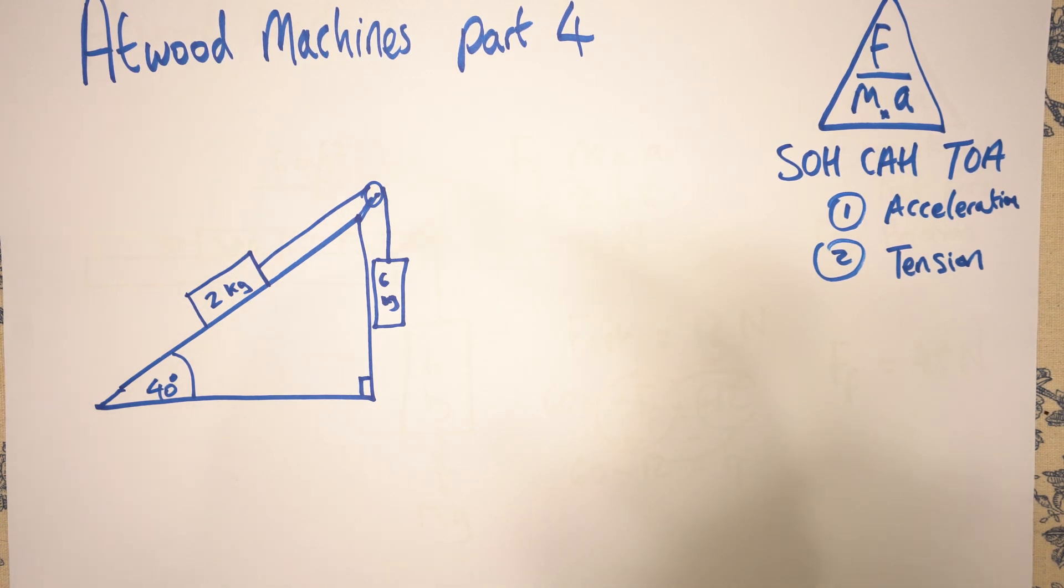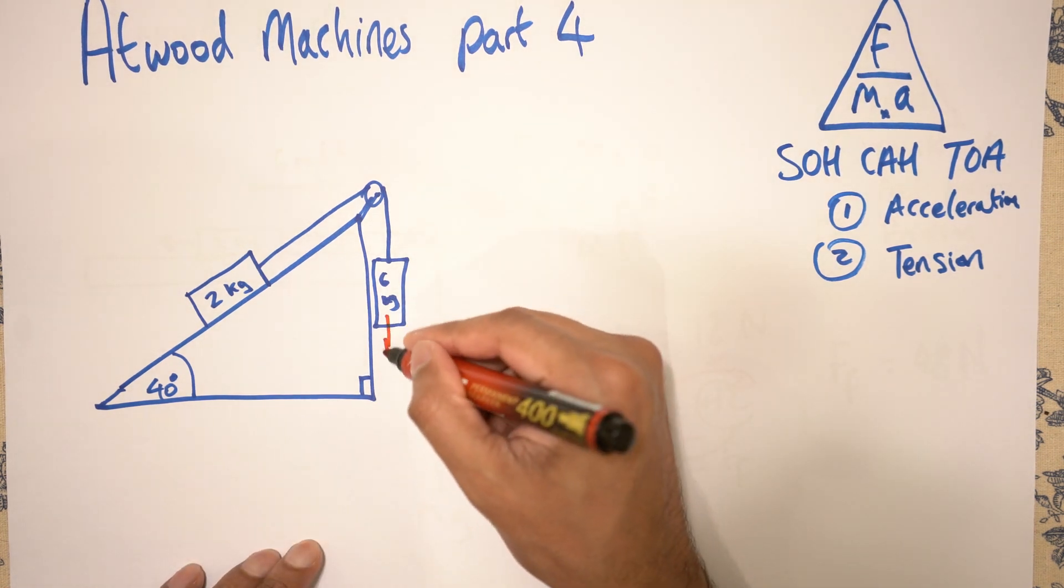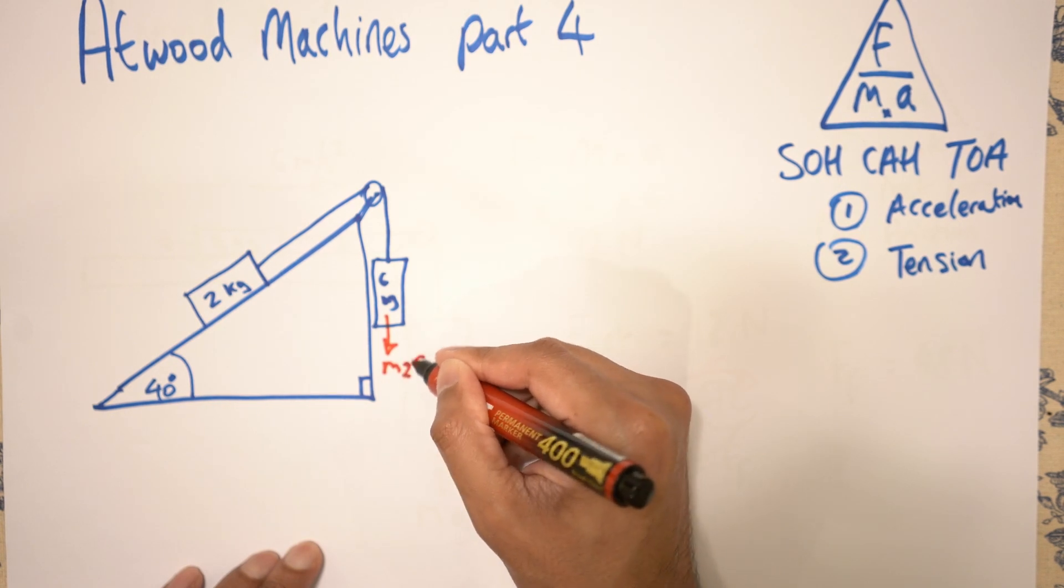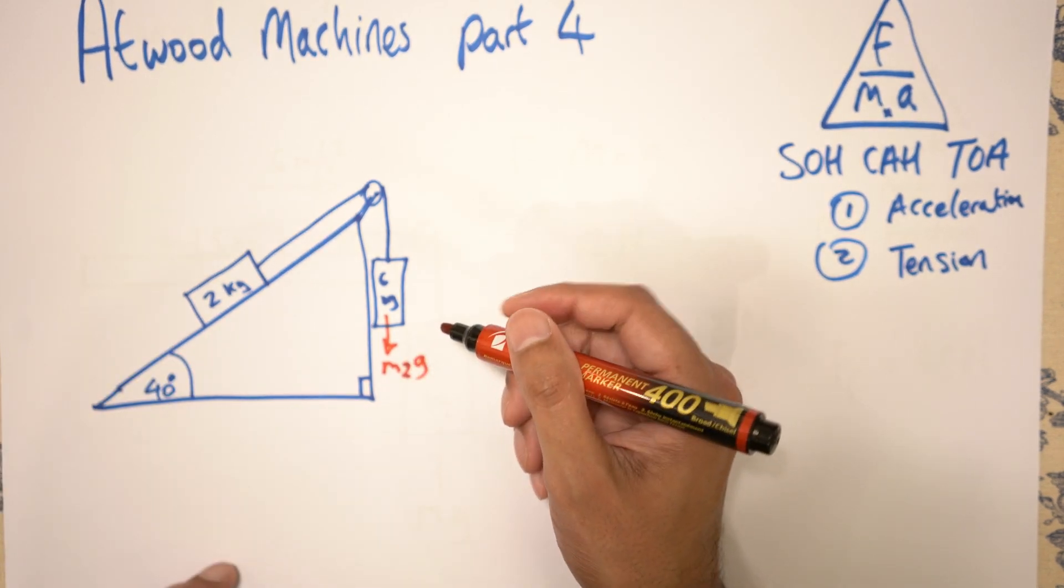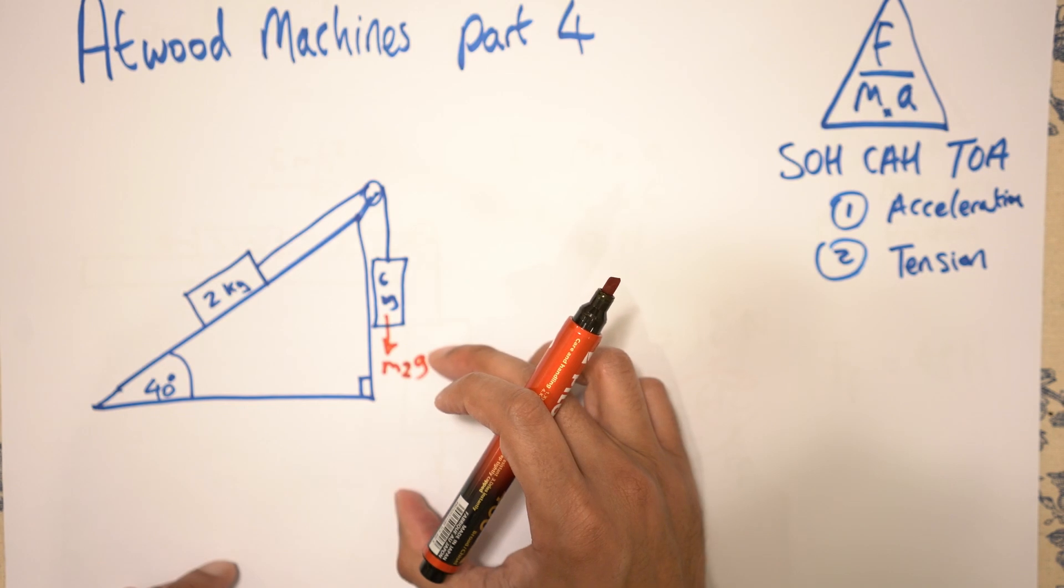So let's first of all work that out. Firstly, let's have a look at the forces. Now this one is just going to be M2G, M2G, because this one is my M1. That's straightforward enough.